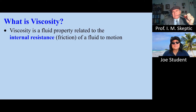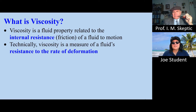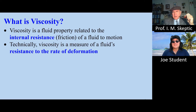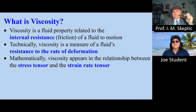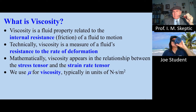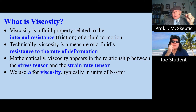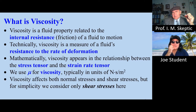Don't call me dude. Viscosity is a fluid property related to the internal resistance or friction of a fluid to motion. Technically, viscosity is a measure of a fluid's resistance to the rate of deformation. Mathematically, viscosity appears in the relationship between the stress tensor and the strain rate tensor. We use the Greek symbol mu for viscosity, typically in units of Newton-seconds per meter squared. Viscosity affects both normal and shear stresses, but for simplicity, we consider only shear stresses here.